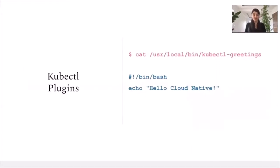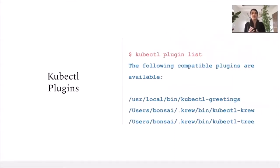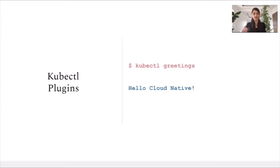Let's look at how a kubectl plugin could be written. Here I have an extremely simple shell script which is going to have an echo command. I would like to draw your attention towards the path and the file name of this particular plugin. The location of the file should be in one of the binary folders defined in the PATH environmental variable — in this example, I have it under /usr/local/bin. The file name for a plugin should always be prefixed by kubectl followed by the actual command. So here we create a greetings plugin and the file name is obviously going to be kubectl-greetings. Once the file is in the right path with the right naming, we don't need to do any install — it will be automatically identified by kubectl. We can validate that by doing a list of our plugins, and you can see the first result is going to be our greetings plugin, followed by any other plugins installed on our machine.